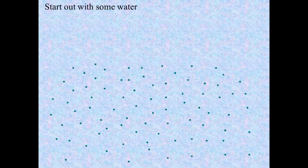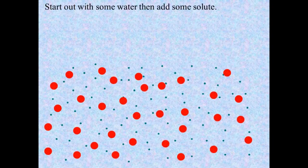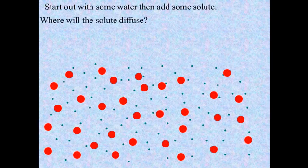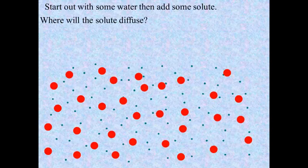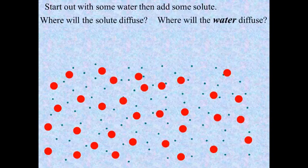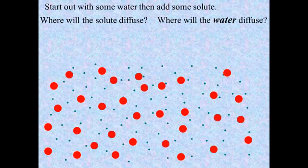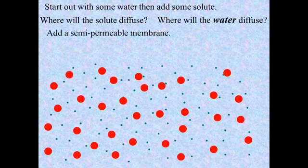Last condition to consider. Same as before, we have some water, now we add some solute, and where's the solute going to go? Now if we look at this, we can see that the solute is distributed fairly evenly throughout this container. So we're not going to see any big changes — there are no places where there's an extremely high or extremely low concentration. Same thing for the water: there's no area where there's a higher concentration of water, so there's no net movement of the water.